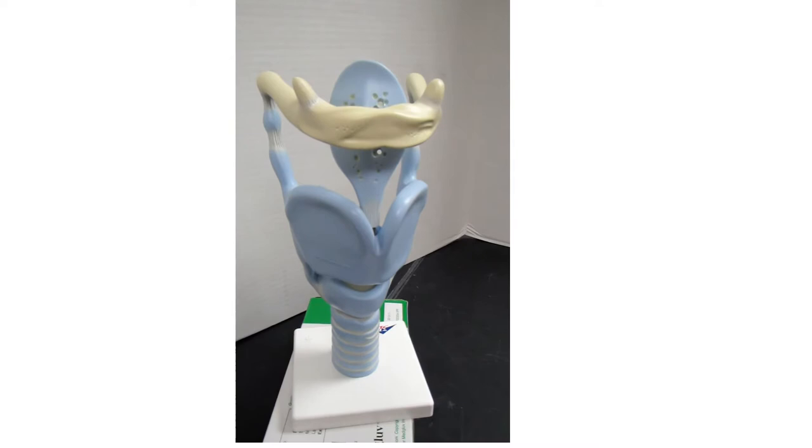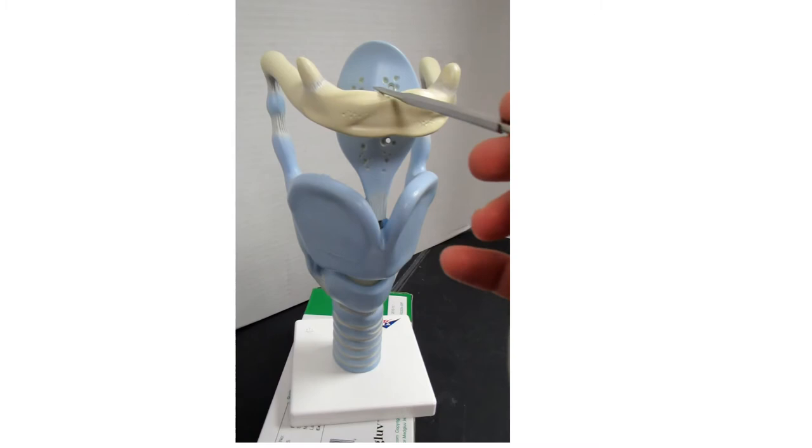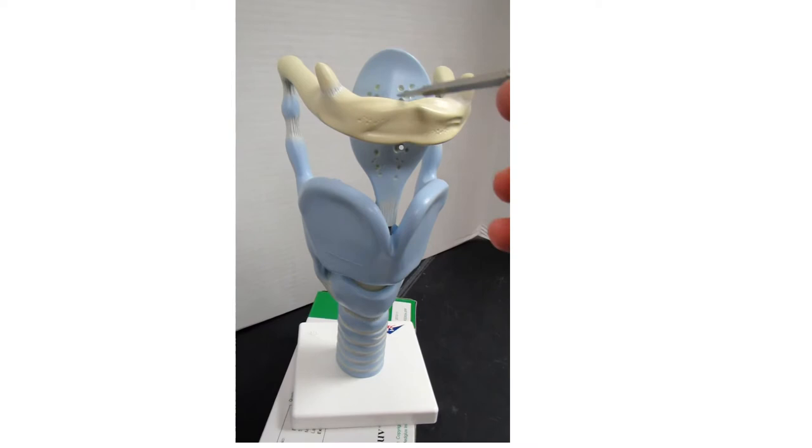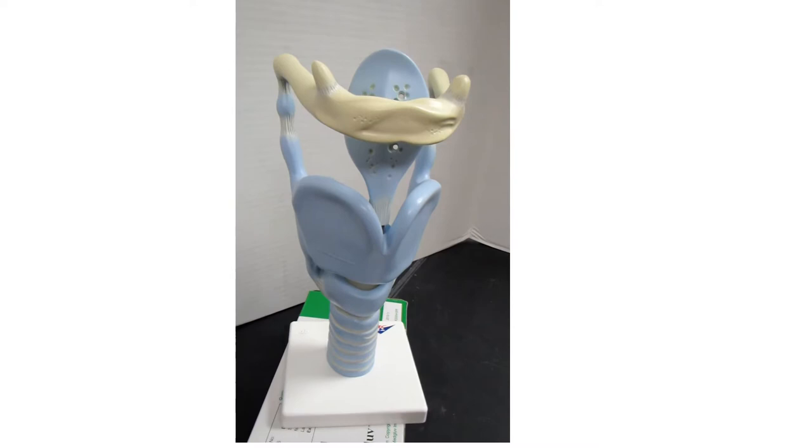Let's take a look at the model of the larynx. You can see this white structure here is the hyoid bone. As you may remember, the hyoid bone supports the tongue on its superior surface. On its inferior surface, it supports the larynx and prevents it from falling down into your throat.